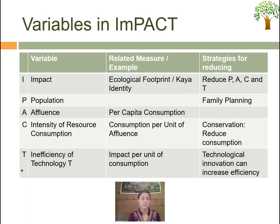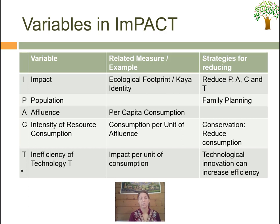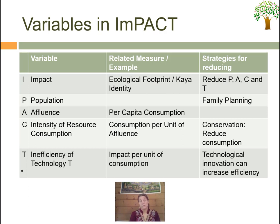P is for population. The measure for population is quite straightforward — it is the number of people existing. The strategy for reduction, as per Ayers, is family planning.